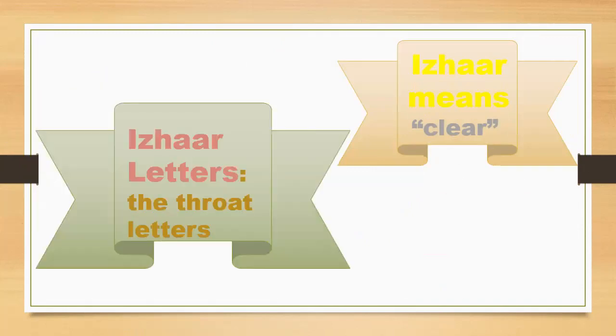The six throat letters are: Hamza, Ha, Ain, Ha, Ghain, and Kha.